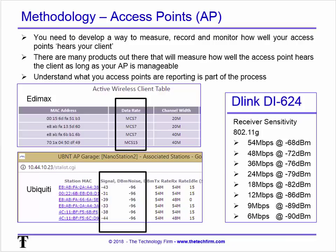When it comes to access points themselves, vendors used to post what data rates you could expect based on signal strength — and they did the same for client adapters as well. That's rare now, and every environment is totally different. Customers were holding vendors to those numbers and complaining, so you should always measure your own performance with your own signal strength.